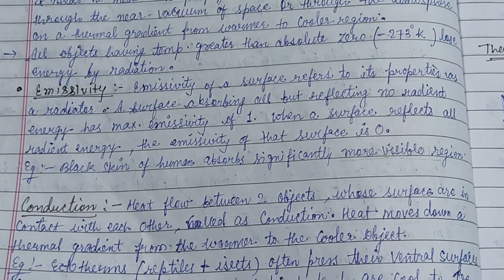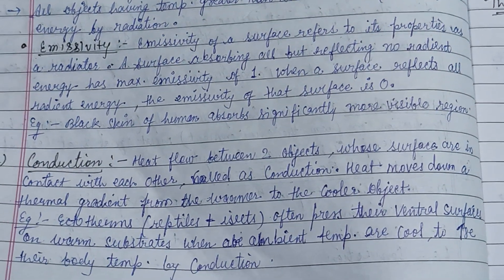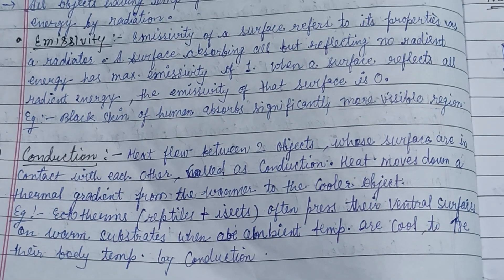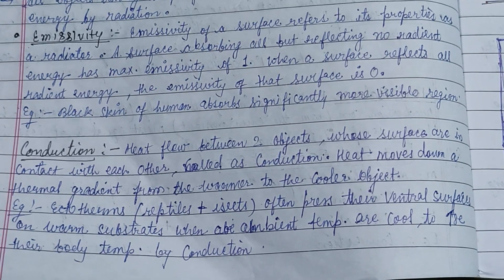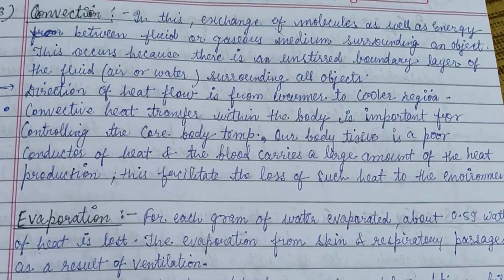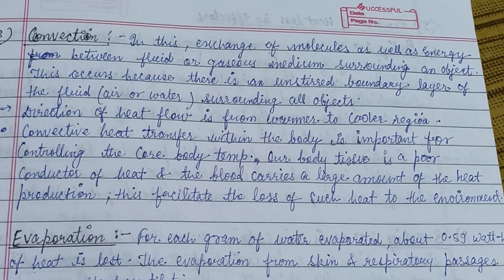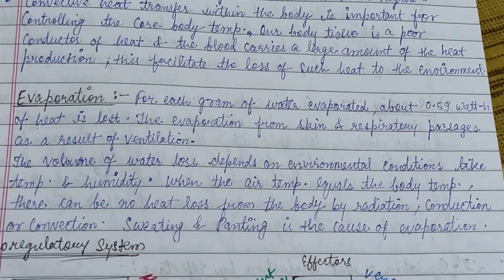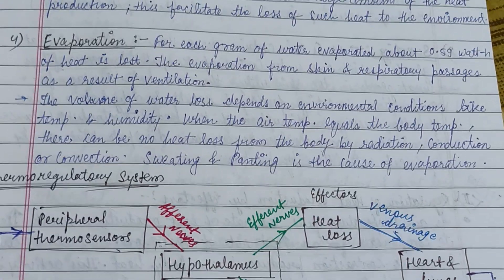Emissivity of a surface refers to its properties as a radiator. Conduction is the heat flow between two objects whose surfaces are in contact with each other; heat moves down a thermal gradient from the warmer to the cooler object. Convection is the exchange of energy between a fluid or gaseous medium. For evaporation, for each gram of water evaporated, approximately 0.5 watts of heat is lost.